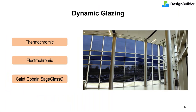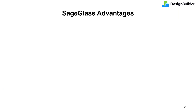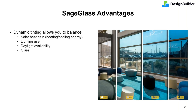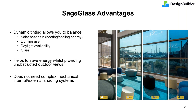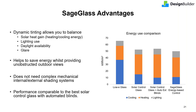To summarize: dynamic tinting allows you to balance daylighting, glare, solar heat gains, and overall energy in an integrated manner. Dynamically changing tint in response to the sun provides unobstructed outdoor views and enhanced occupant comfort without the need for traditional solutions like shades, low-e glass, or blinds. For a typical shoebox in climates with both heating and cooling demand, SageGlass performance is much better than a typical low-e glass solution and is comparable to solar control glass with blinds, but with superior clear views and without complicated mechanical systems.